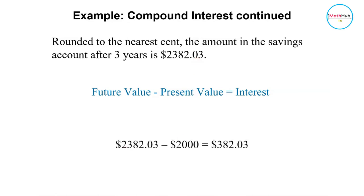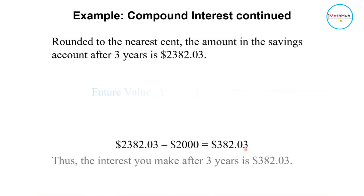Subtract 2,382.03 minus the principal amount, which is 2,000, and that gives you 382.03. Now this amount here is the interest you make after 3 years.